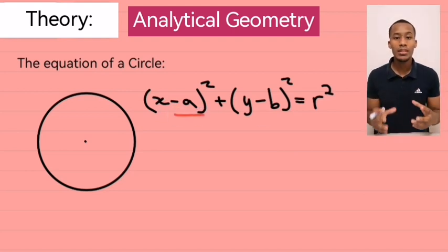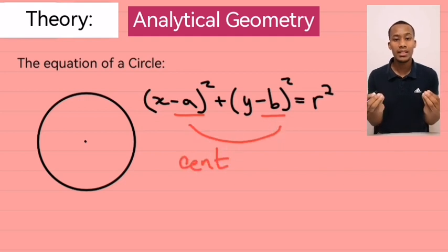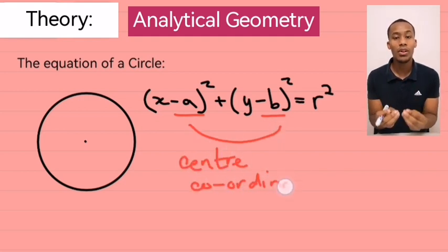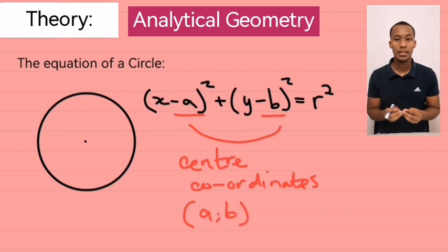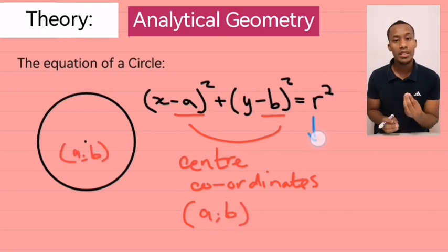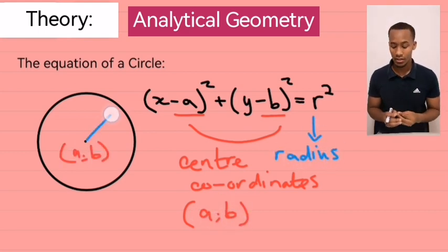So, in this circle equation, a and b represents the center coordinates of the circle. And r represents the radius of the circle.